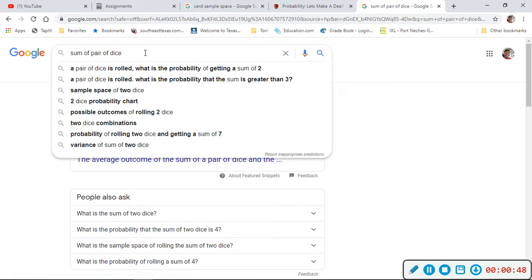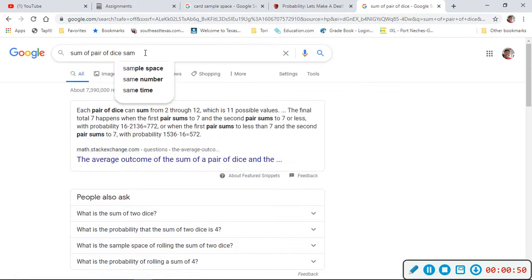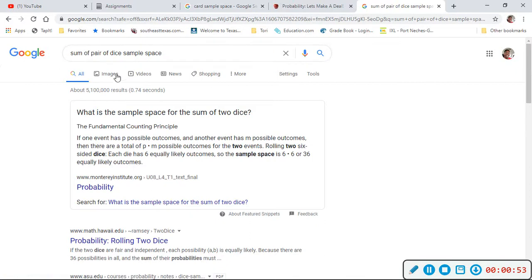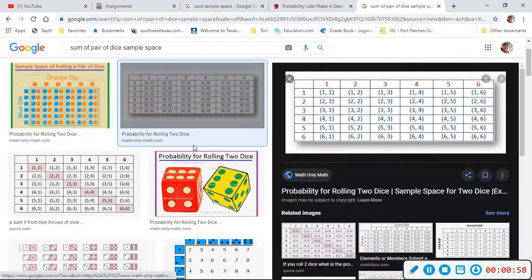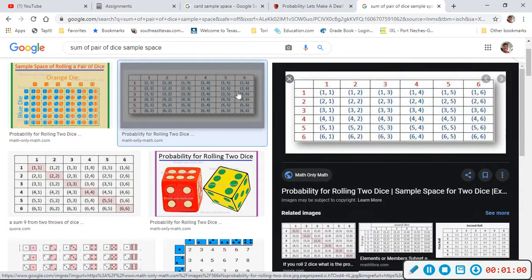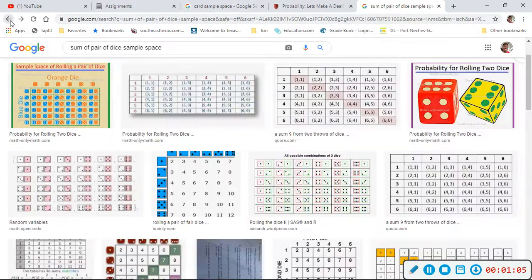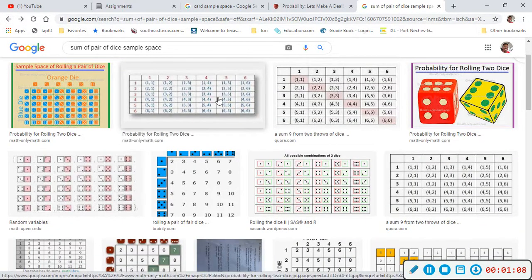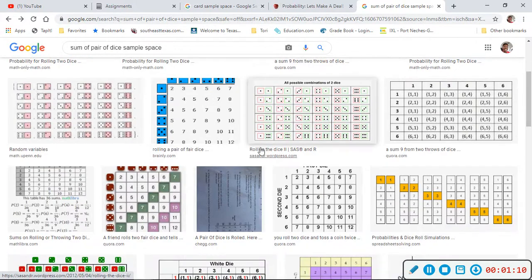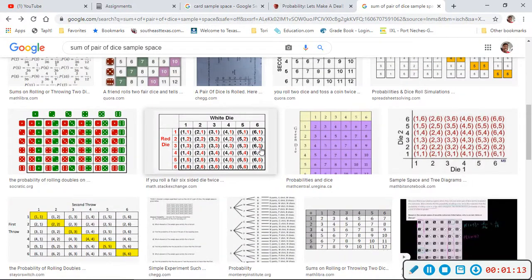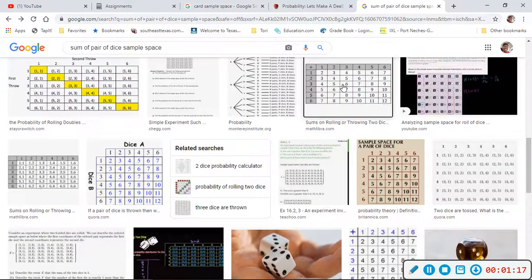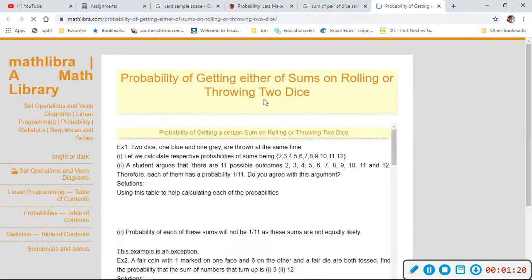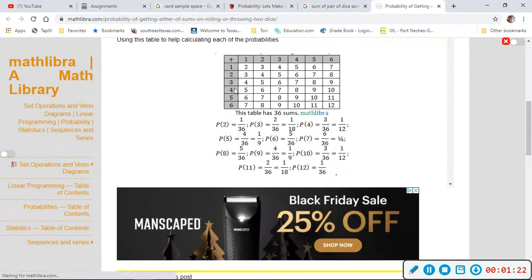Let me do sample space image. This will work. No, this is not what I want. Let's go back. I want the sum. Where is one that shows the sum? This will work.